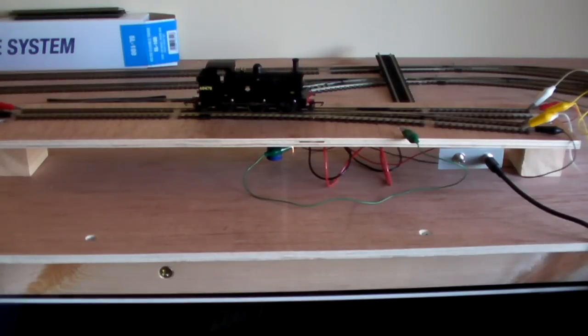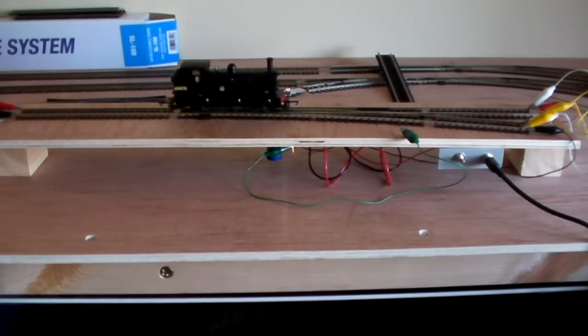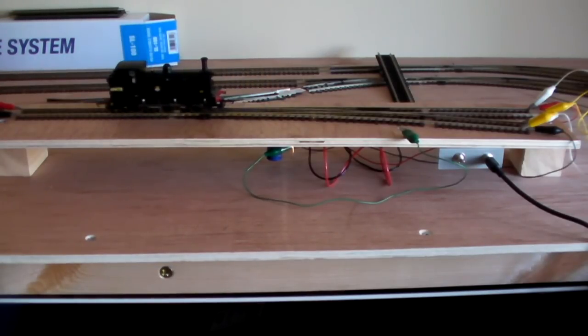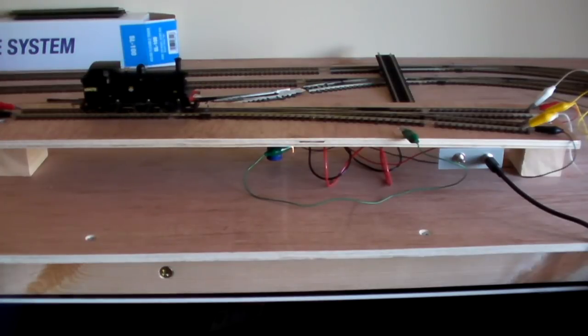Now that it's all working, I can fit the two express points to the loop in position. They're both going to be running from the same control, same switch, so I'll use that little bracket with the switch and power supply for the two together.